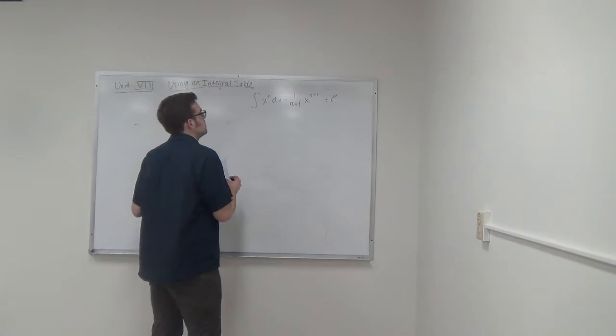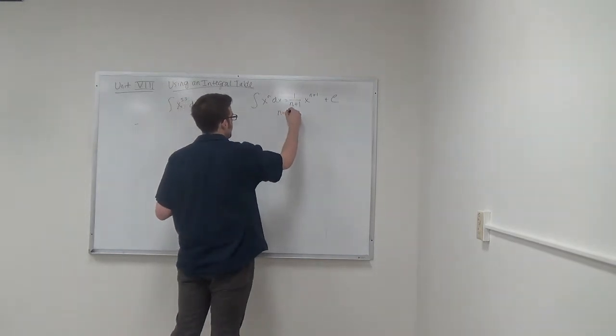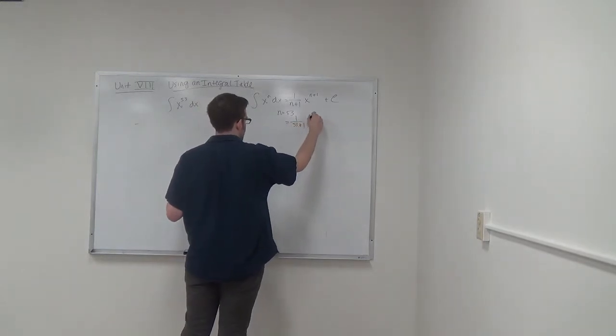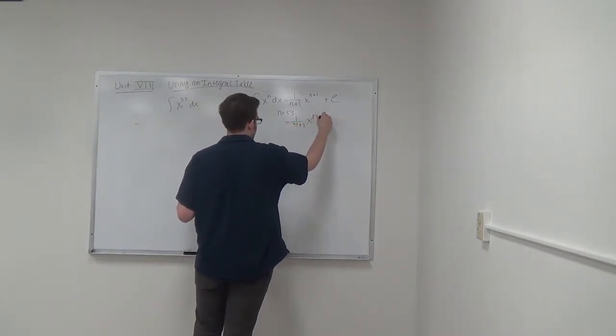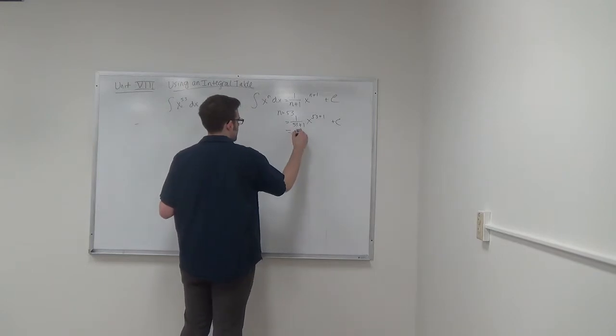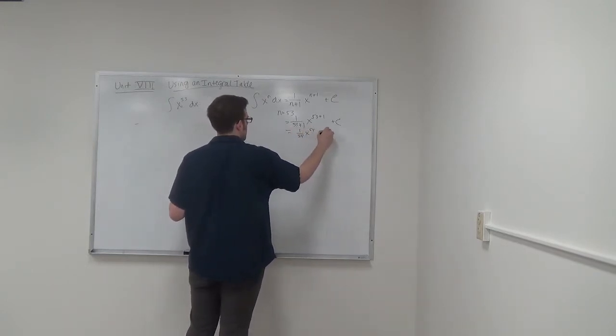So here, n is equal to 53, so we have 1 over 53 plus 1, x to the 53 plus 1 plus c, is equal to 1 over 54, x to the 54 plus c.